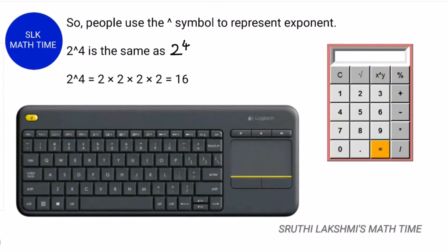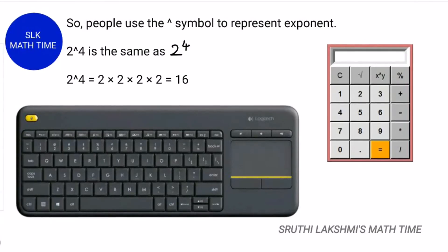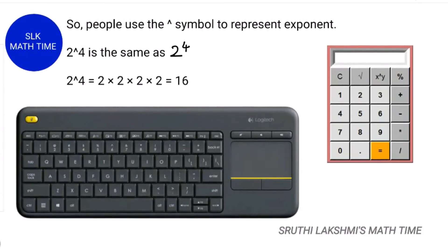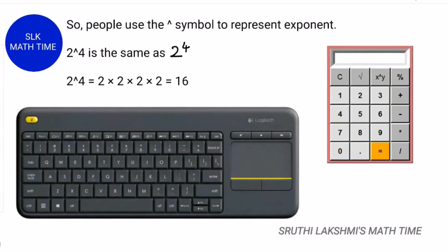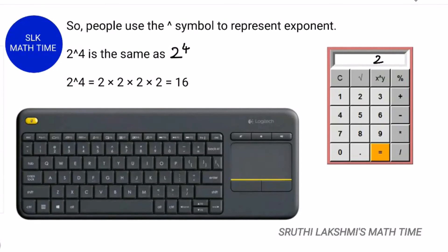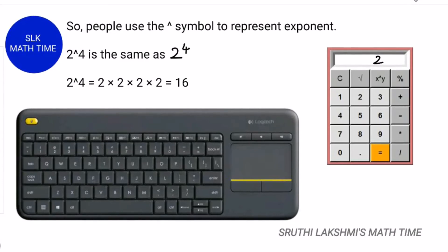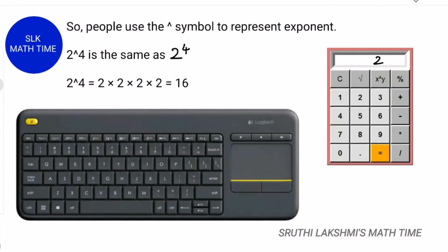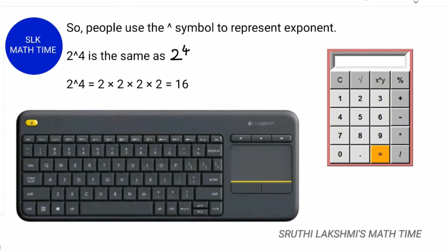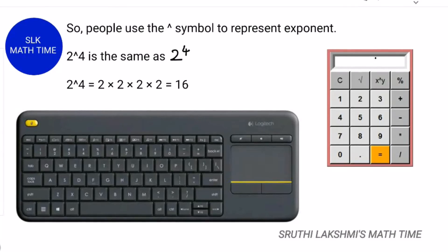On a calculator, some calculators will show x caret y. So for 2 power 4, you type 2, then press the caret symbol, then press 4, then press the equal sign, which will give us 16.